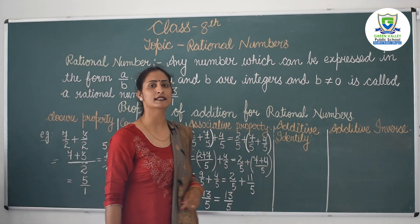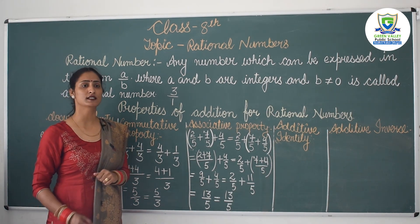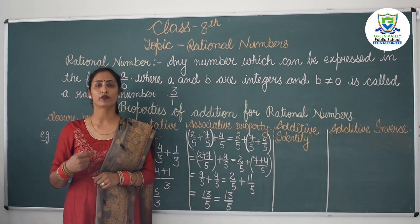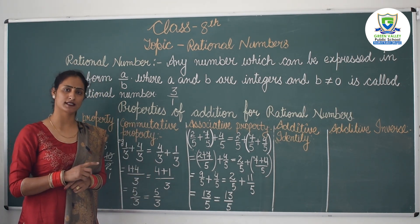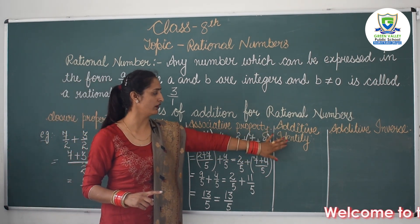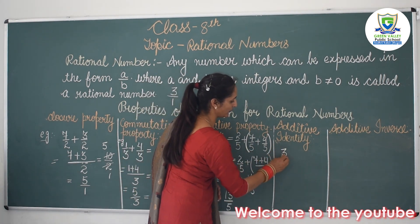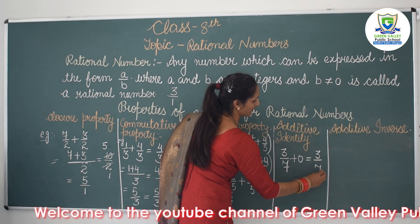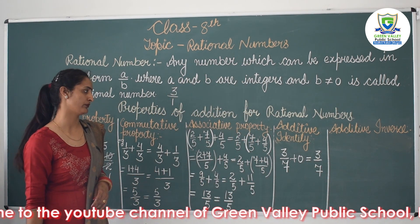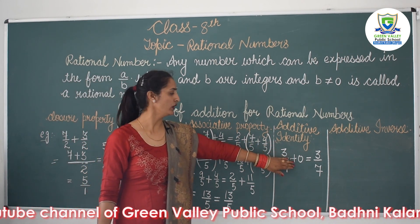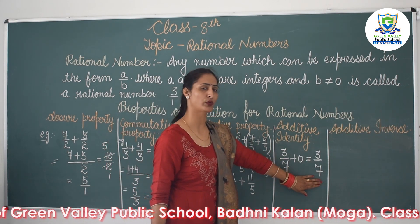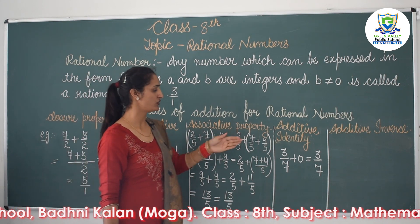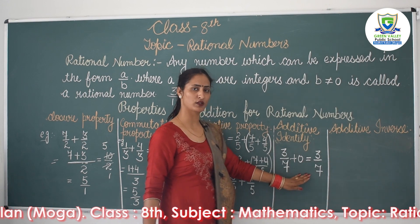The fourth property is additive identity. It means the sum of a rational number and zero is always that rational number. If you add zero to any rational number, the value of that rational number will not change — it will remain the same. For example, 3/7 plus 0 equals 3/7. So for rational numbers, the additive identity is zero, because adding zero does not change the value.